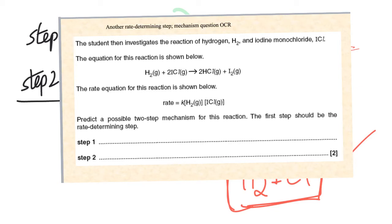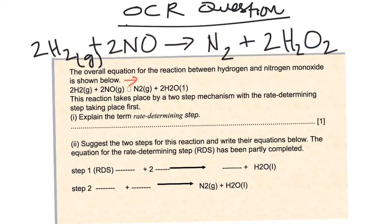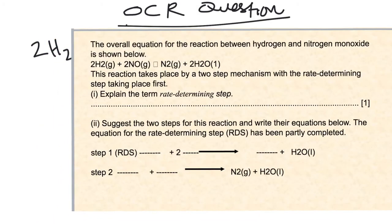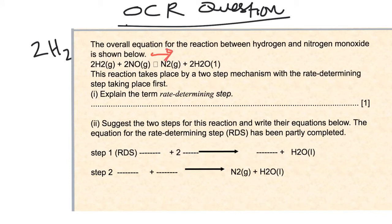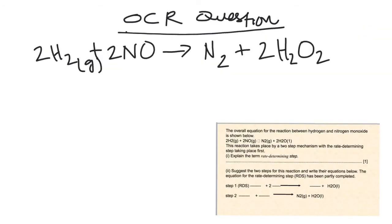Here is another OCR exam question. The first part asks: what is the rate determining step? The answer is that it is the slowest step of the series of steps for the overall reaction taking place. The overall reaction is given, along with part of the two-step process for the mechanism. Note that the box in the question is actually an arrow — a copy-paste formatting error — but the equation has been rewritten on the whiteboard.